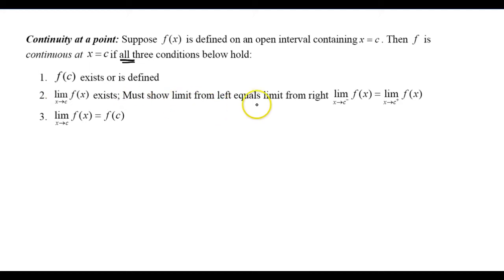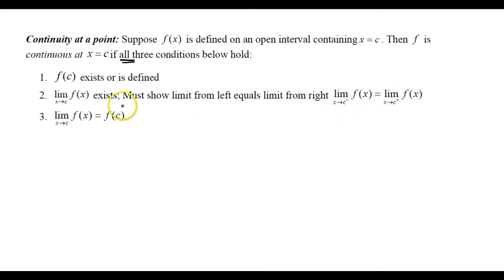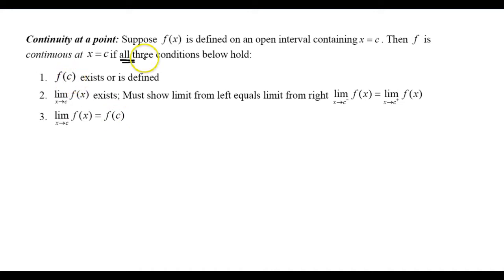The second condition: the limit as x approaches c of f of x must exist. I must show the limit from the left equals the limit from the right. And then finally, the limit as x approaches c of f of x — from part two — must equal the function value when I substitute c into the function. That is part three.